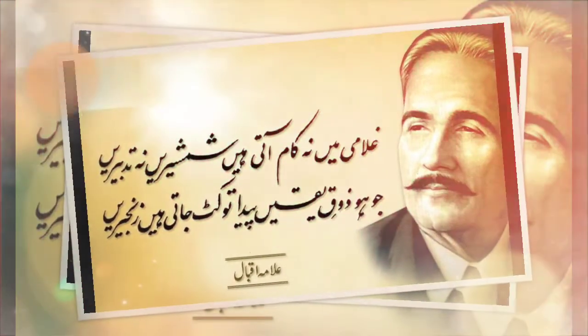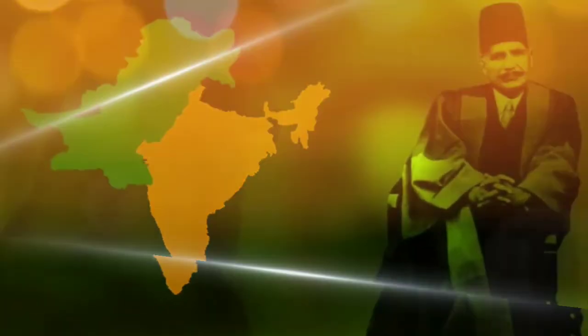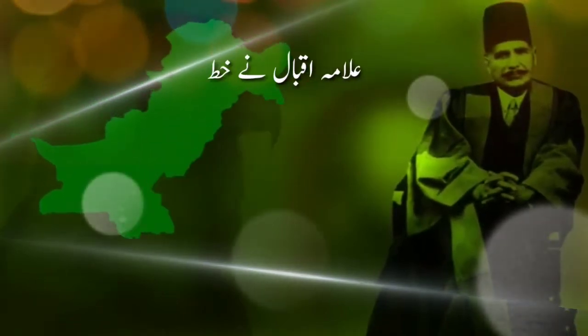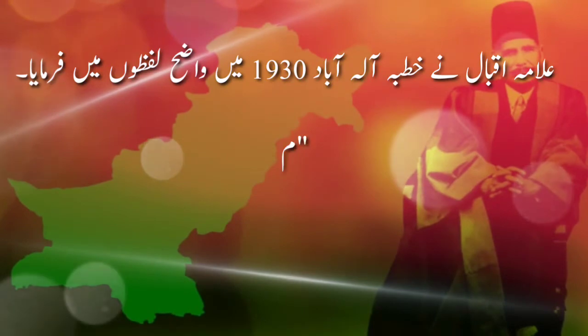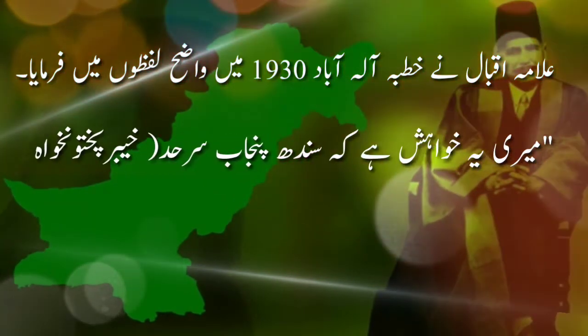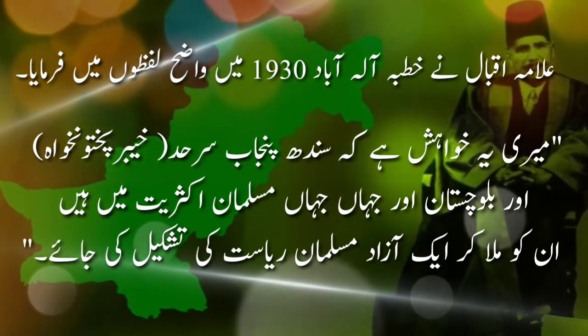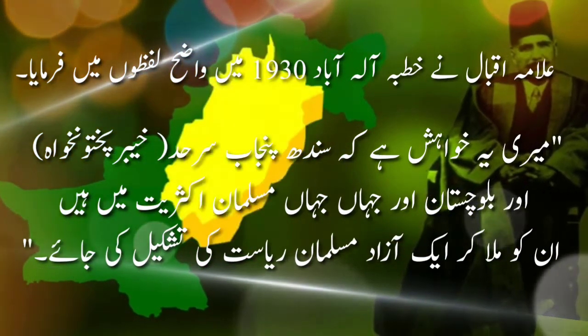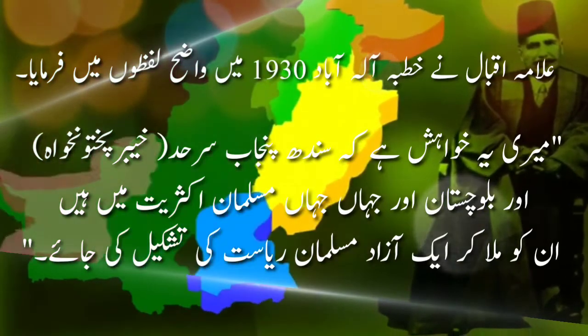Tashkeel-e-Pakistan ke safar mein azeem muffakir, shair aur siyasi rehnuma Allama Muhammad Iqbal ne bhi qaum mein milli shu'oor bedaar kiya aur do qaumi nazriye ki agahi di. Allama Iqbal ne Khutba-e-Allahabad 1930 mein wazeh alfazon mein kaha: 'Meri yeh khwaish hai ke Punjab, Sarhad (jo Khyber Pakhtunkhwa ke naam se jana jata hai), Balochistan aur jahan jahan Musalman aksariyat mein hain, unhe mila kar ek azad Muslim riyasat ki tashkeel ki jaye.'